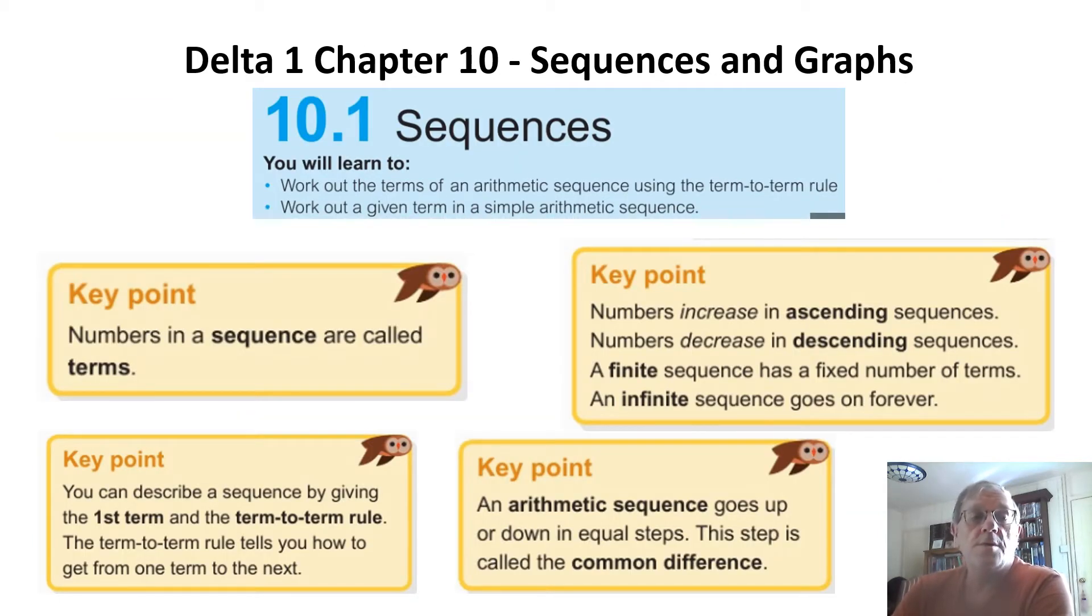So, delta 1, chapter 10, sequences and graphs. A few key points to start with. Numbers in a sequence are called terms. So the terms can go up, which we call increasing or ascending, or they can go down, which means the sequence is decreasing or descending. A finite sequence has got a fixed number of terms and an infinite sequence just goes on forever. You can describe a sequence by giving the first term and the term to term rule. The term to term rule just tells you how to get from one term to the next. An arithmetic sequence goes up or down in equal steps. This step is called the common difference.